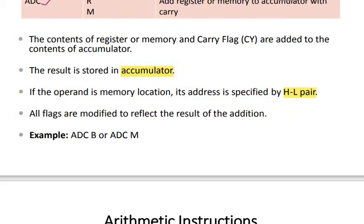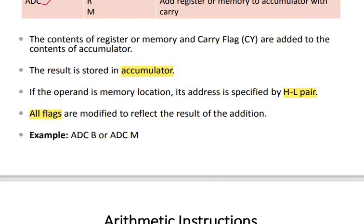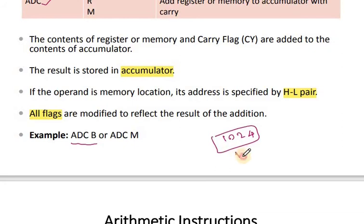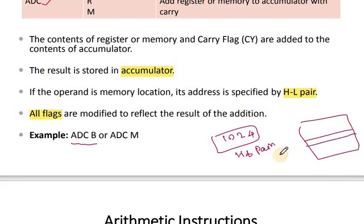For arithmetic operations like addition and subtraction, all flags should be modified because there may be a carry or other relevant values. In the ADC example, the carry flag value is also added along with the register value and the accumulator value, and the result is stored back in the accumulator.